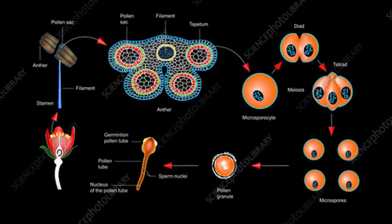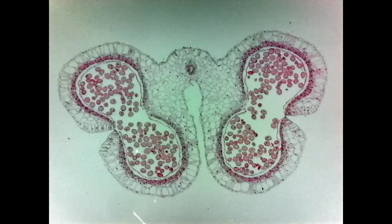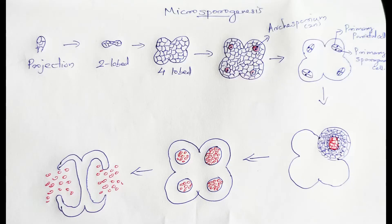Anther under the projection method consists of a homogeneous mass of cells. Then the terminal portion is converted into a two-lobed structure, then a four-lobed structure. Inside each lobe, a single cell differentiates called archespore. This archespore divides mitotically to form two daughter cells. The outer cell is called the primary parietal cell, and the inner cell is called the primary sporogenous cell. The primary parietal cell undergoes repeated periclinal and anticlinal divisions to form a wall called the anther wall.